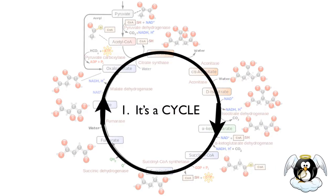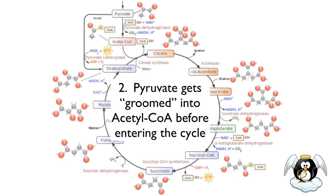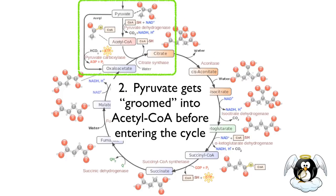First thing: it's a cycle — it goes round and round. The second thing is that pyruvate gets groomed — it gets chemically altered into something called acetyl-CoA before it enters the cycle. A lot of students, when they look at the order of events — glycolysis, then the citric acid cycle, then the electron transport chain — wonder what happened to pyruvate. Pyruvate doesn't actually enter the cycle directly; it gets chemically altered into acetyl-CoA. That's what happened to it.